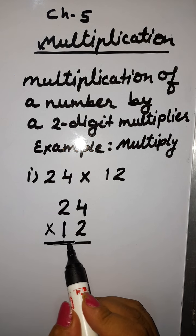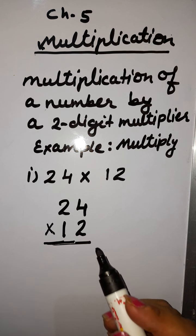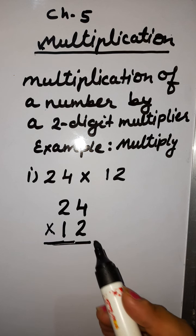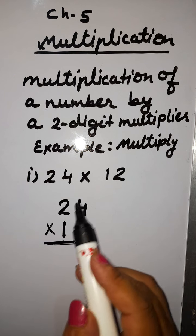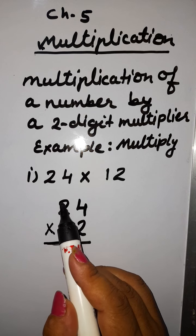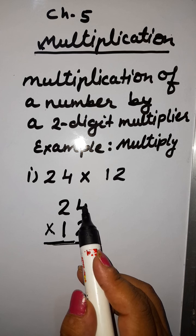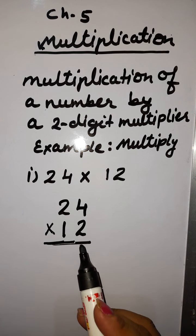As we explained in the previous tutorial class, whenever we multiply any digit, whenever we start multiplying, we just start from the ones place or unit place. So this one is the unit number, this one is the tens number. We have only two digits here. This is ones and this is tens. So we will start from the ones.